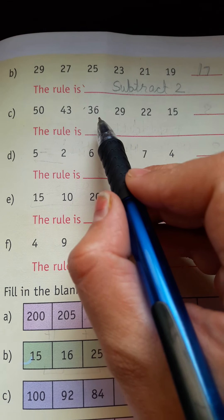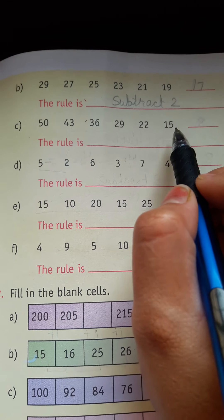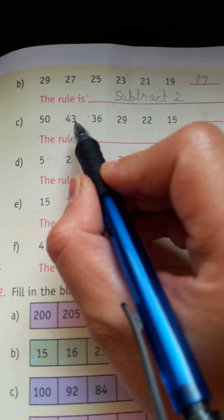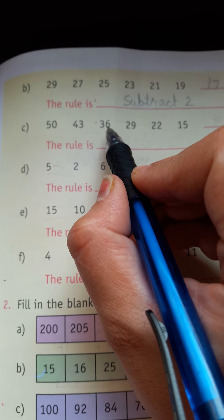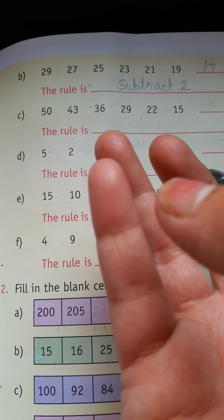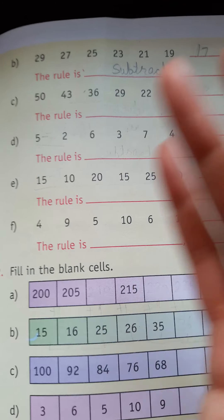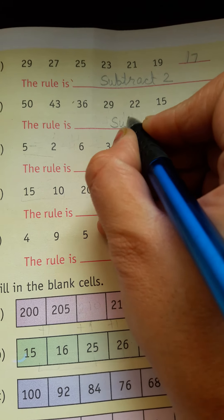50, 43, 36, 29. This is going backwards. How much will it be? 50 minus 43 is 7. 43 minus 36 is 7. Going backwards: 49, 48, 47, 46, 45, 44, 43. What will it be? Subtract 7.